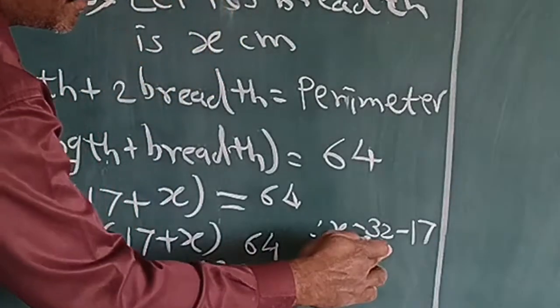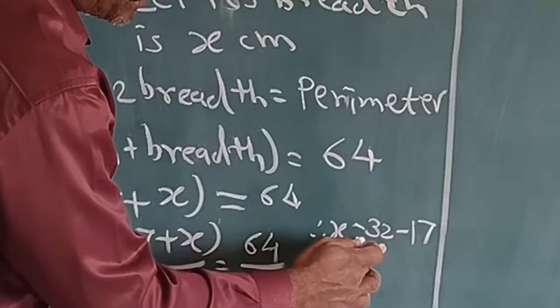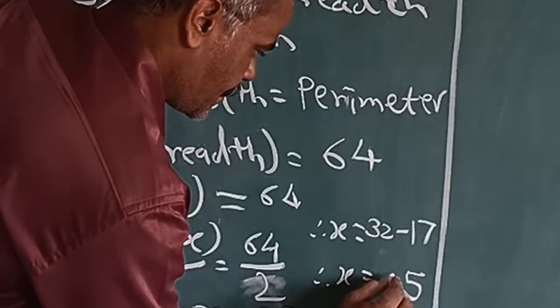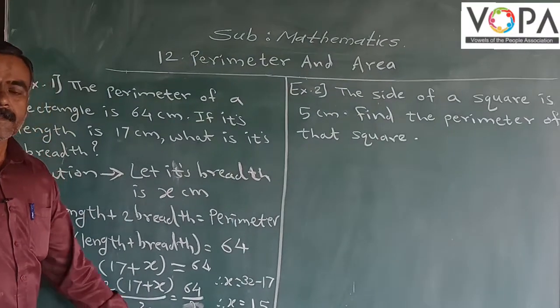X is equal to, if we subtract 17 from 32, then we get 15. X is equal to 15.